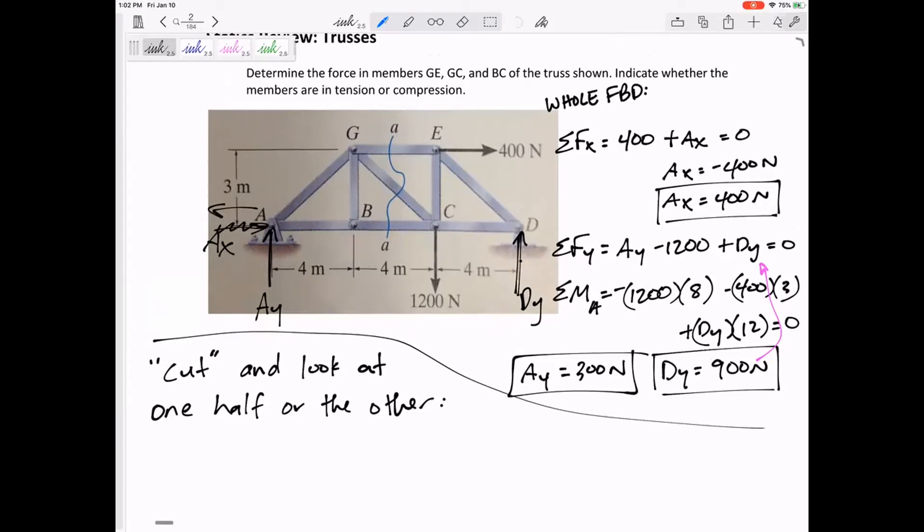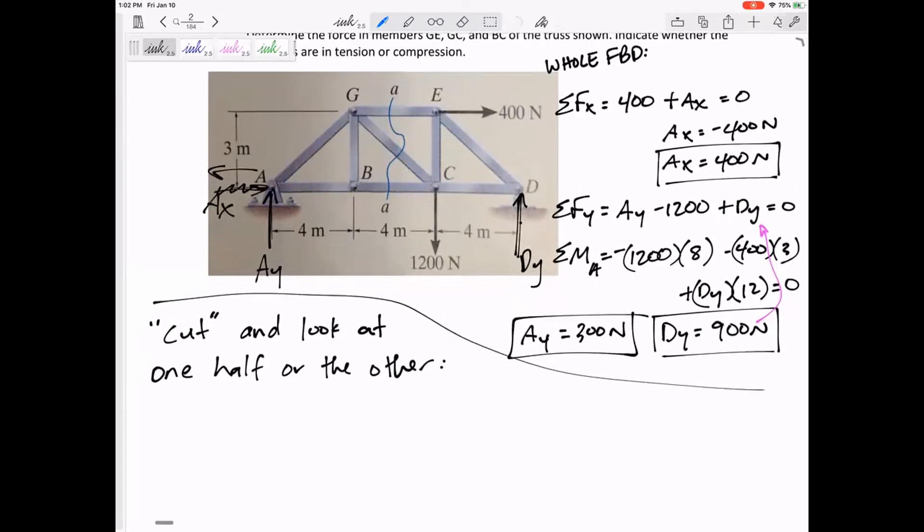Let's look at trusses. For trusses, y'all remember method of sections? We would cut it and only look at one half or the other. So if I want to know what's happening in GE, GC, and BC, I would cut it through those members. When you cut them, you expose their internal forces.